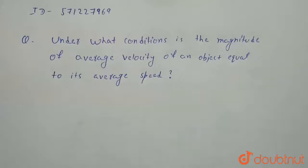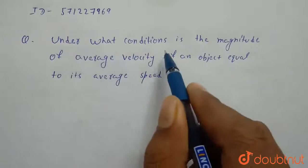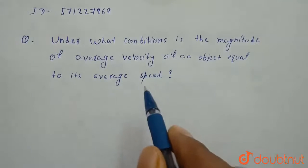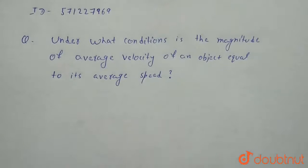Dear friends, so we have this question. Under what condition is the magnitude of average velocity of an object equal to average speed?